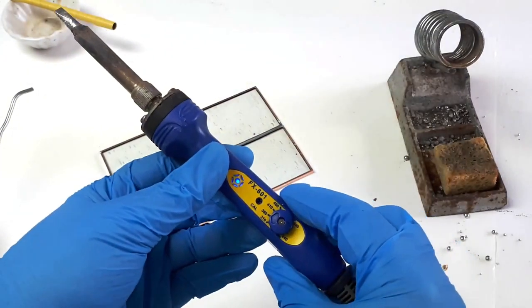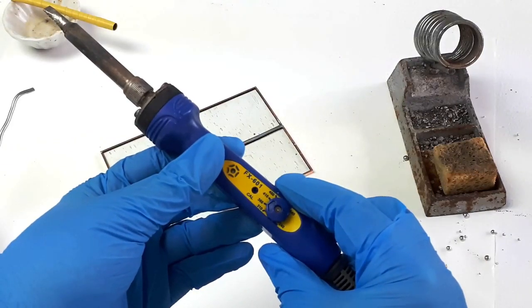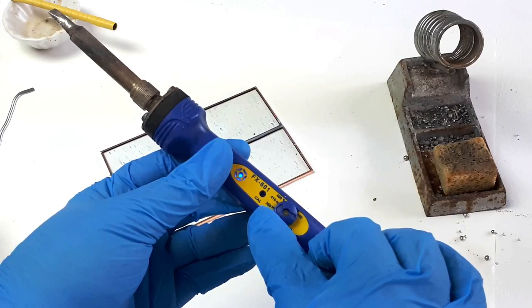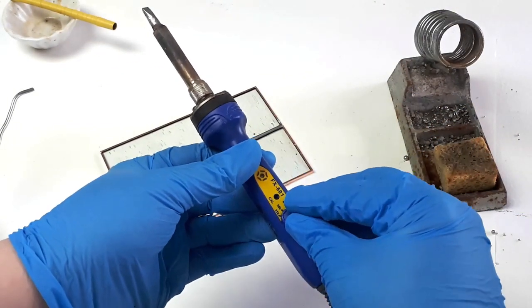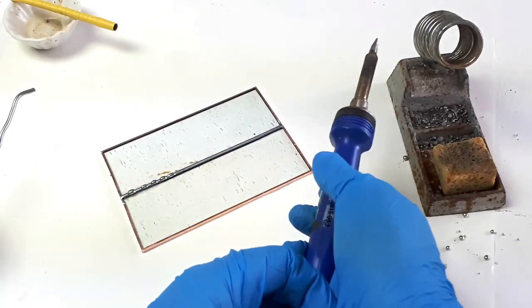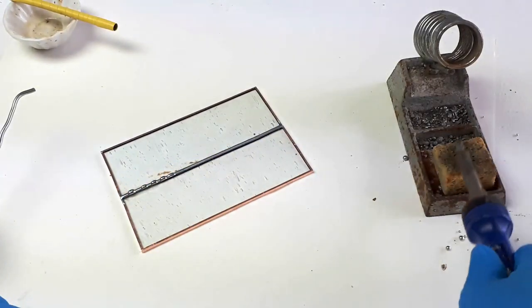So if you have an adjustable iron, right now this is my Hakko and it is at 360, so I'm going to turn that down to 310 just so that I don't have quite as much heat in the tip, and it will prevent everything from warming up so quickly.